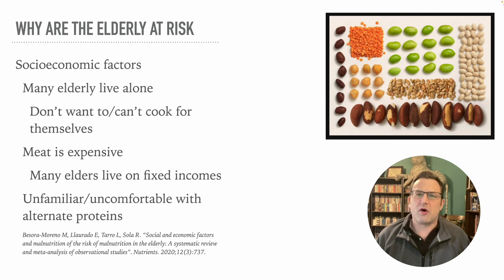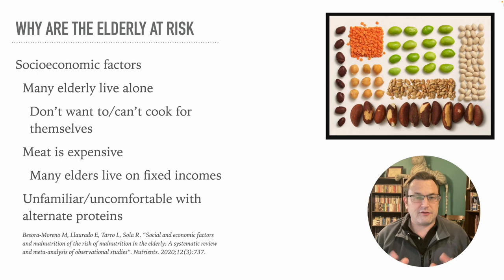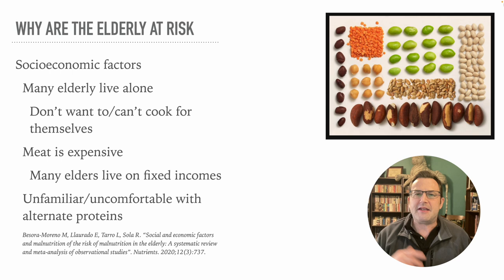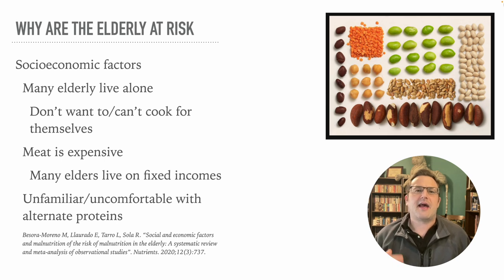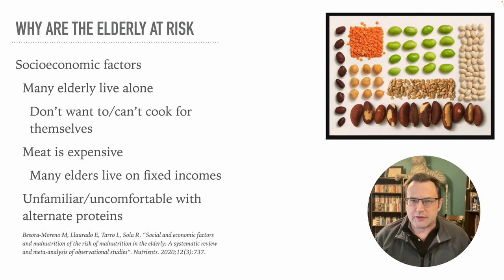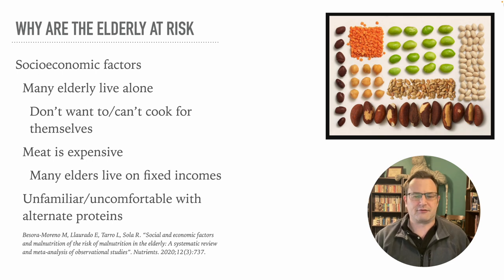Elders are also unfamiliar or uncomfortable with alternate protein sources. They tend to think they need a meat, a starch, and a vegetable, and they're not comfortable with a meatless meal. They're especially uncomfortable with something like tofu. If you're trying to convince them to eat tofu or quinoa, it's a very hard sell. They prefer to stay in their lane, and selling them on a new food item is a little tricky.